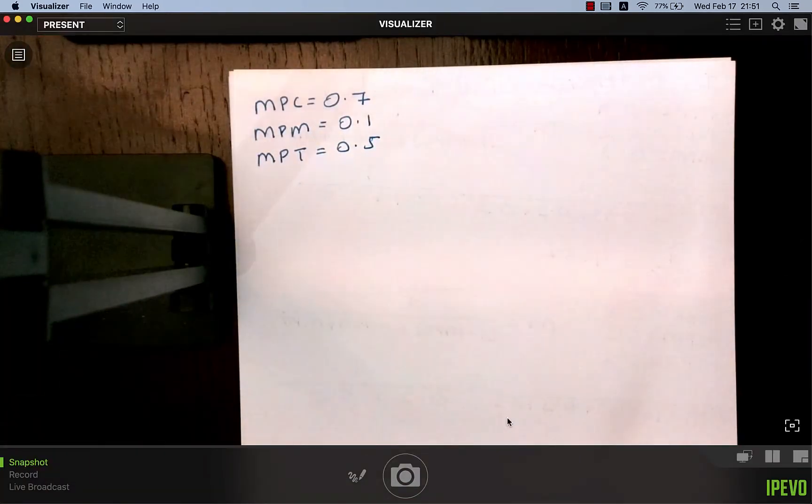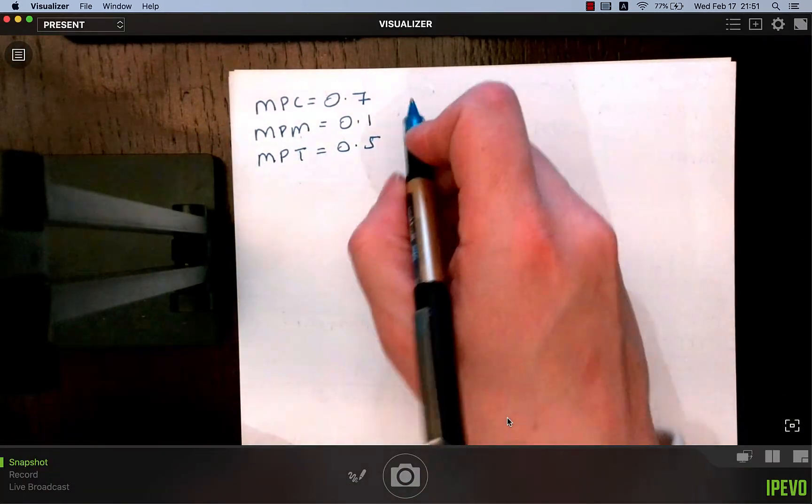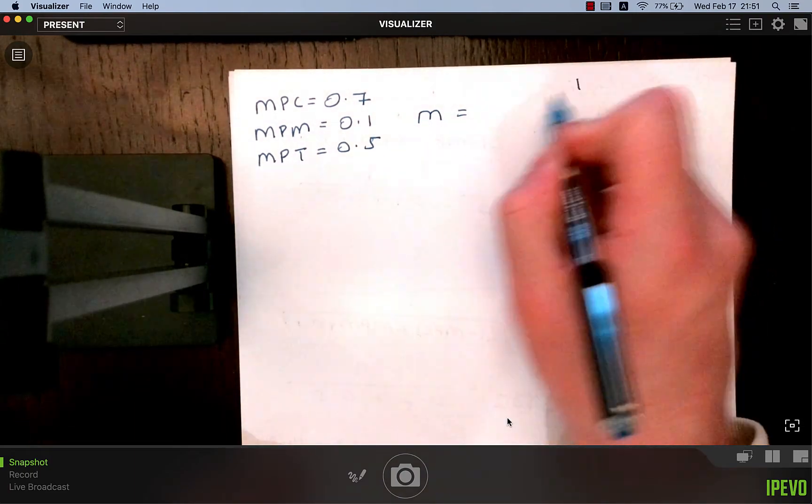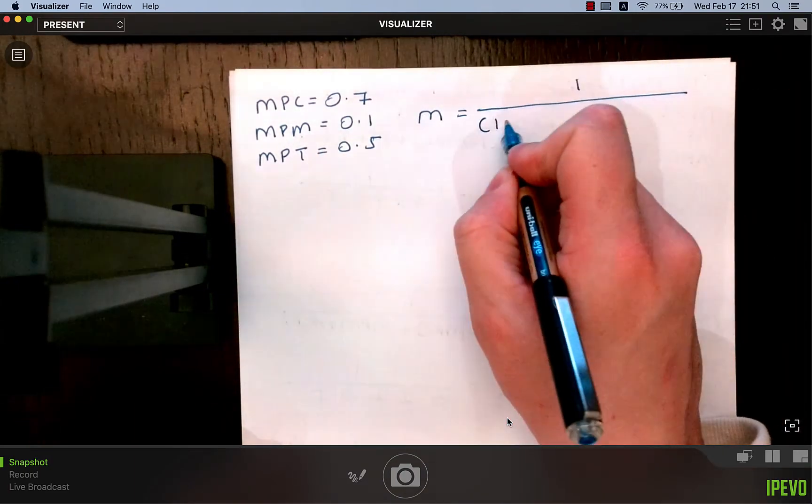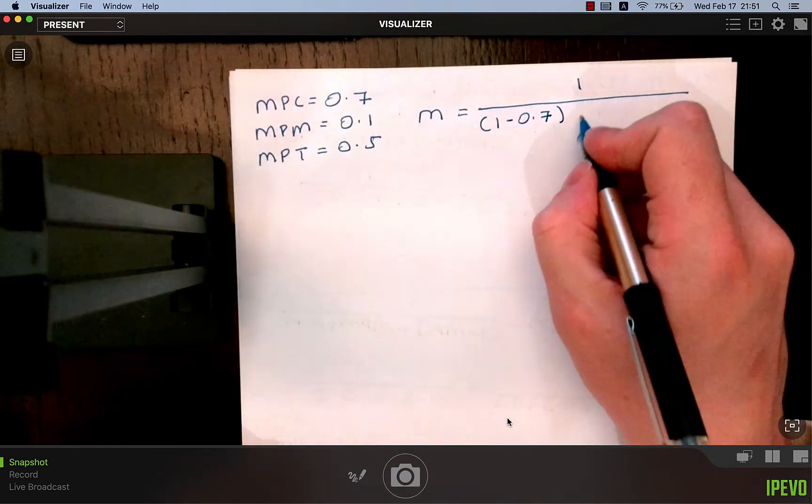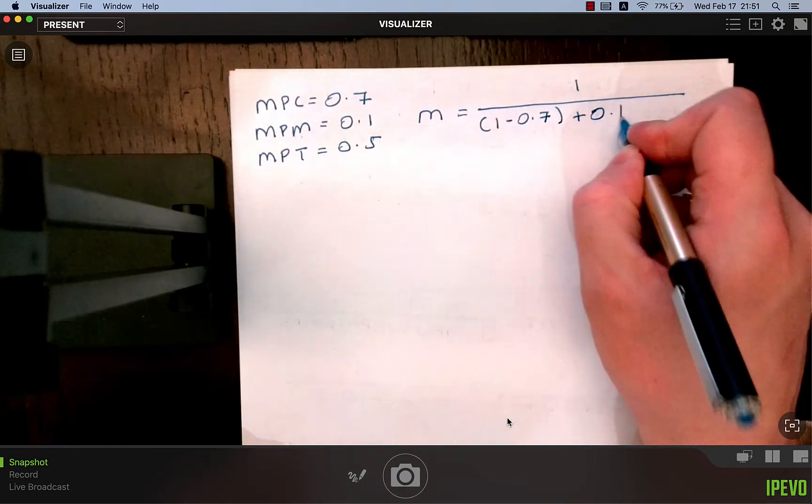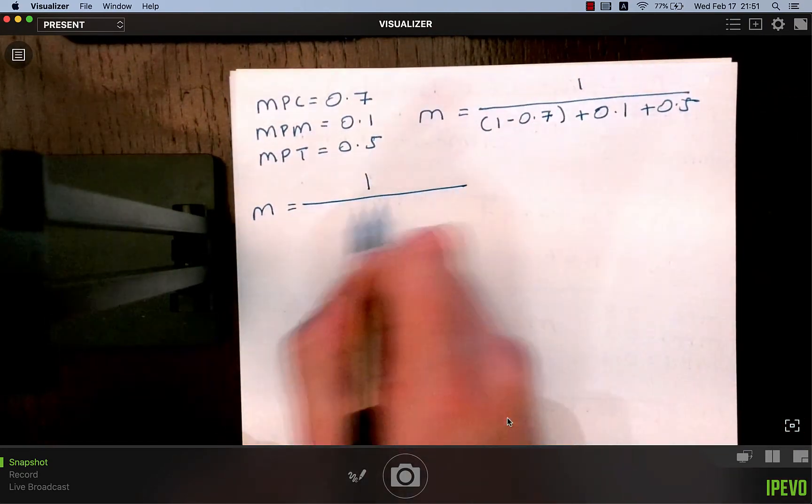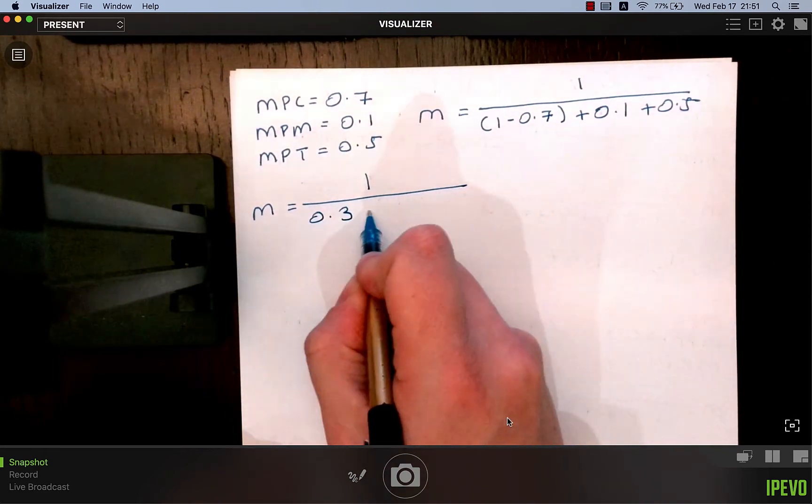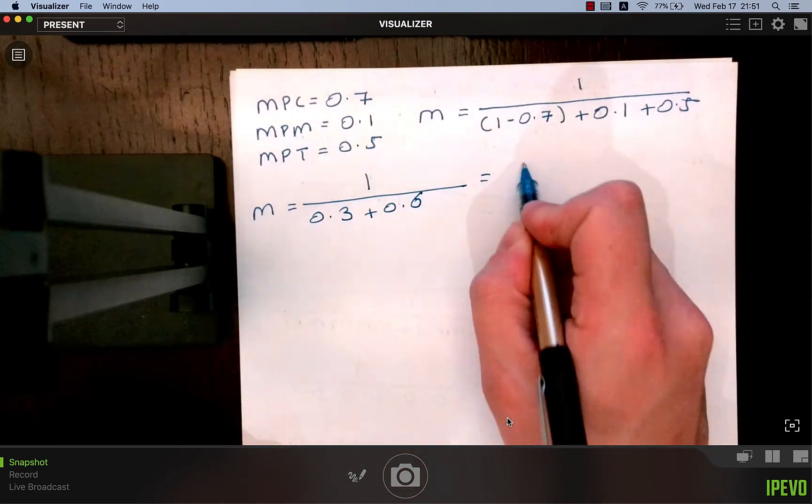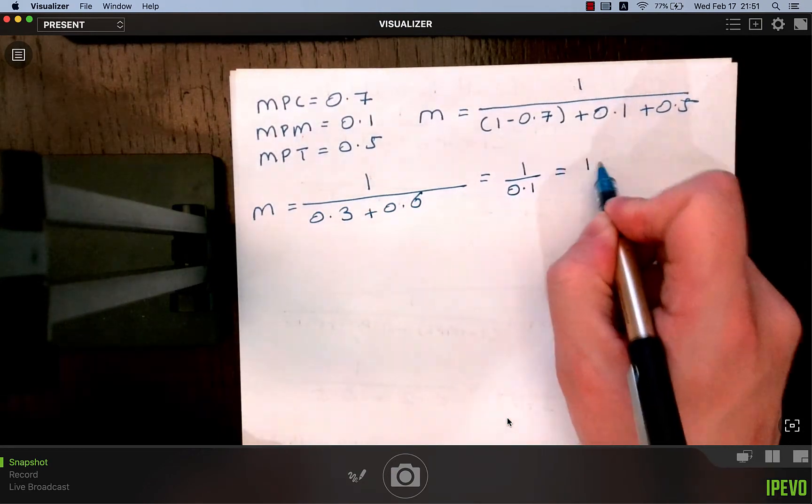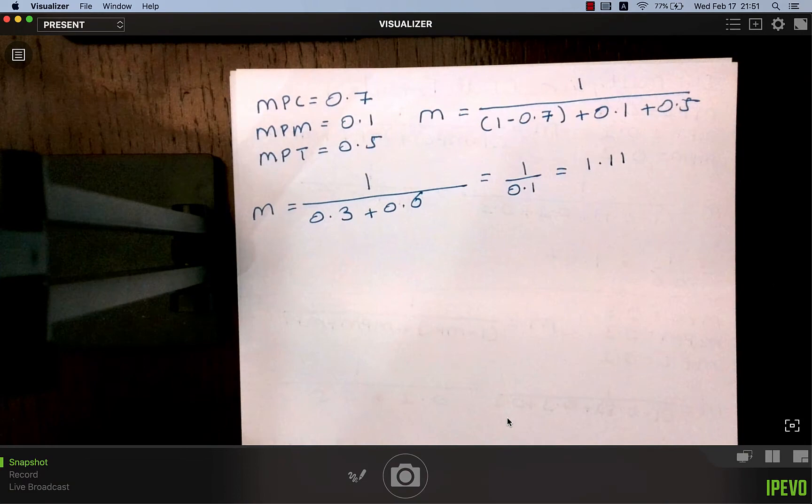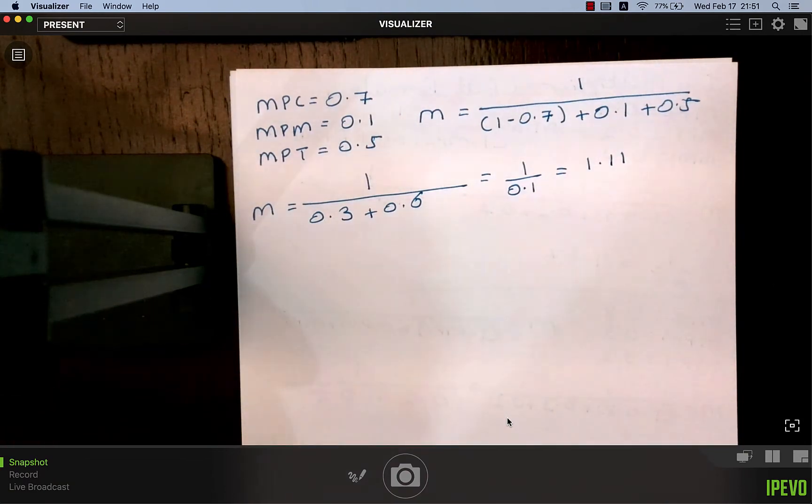The multiplier equals 1 over 1 minus 0.7 plus 0.1 plus 0.5, which equals 1 over 0.3 plus 0.6. That equals 1 over 0.9, which is 1.111 recurring. What is the economic meaning of that figure? Any initial injection into the circular flow of income will cause national income to rise by 1.11 times that injection.